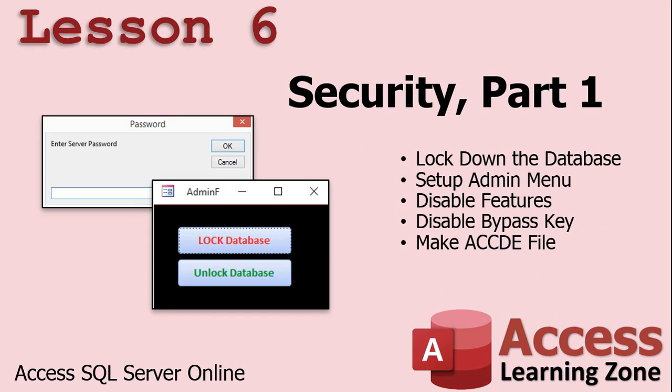In lesson six, we're going to start talking about security for your database. We're going to lock down the database and set up an admin menu with two buttons — lock database and unlock database. The lock database turns off all the features you don't want your end user having, like the navigation pane. Plus we'll see how to disable the bypass key so they can't hold down the shift key to get into your database. Then we'll make an ACCDE file to encrypt and lock it up.